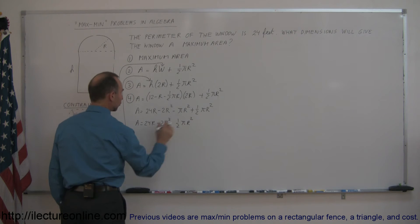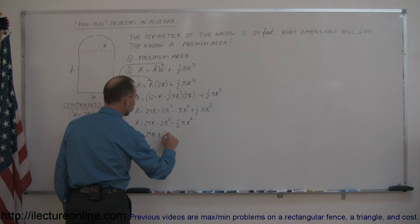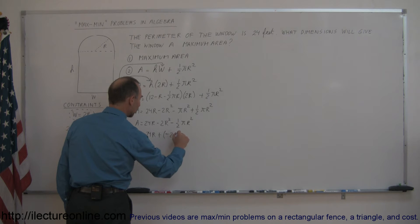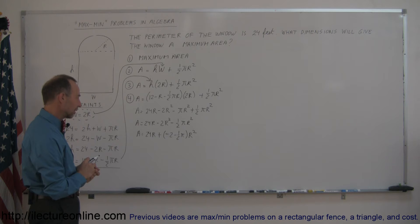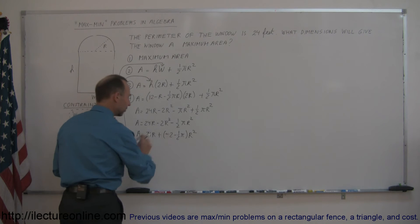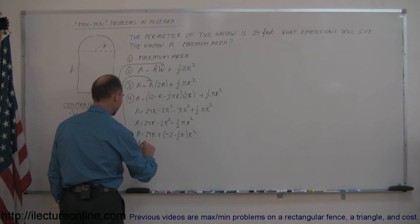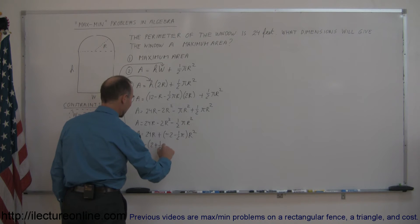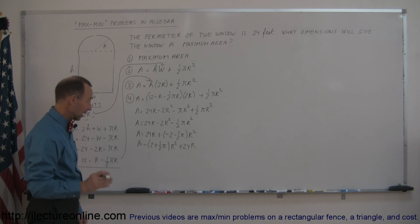Rearranging into quadratic form, we get A equals negative (2 plus one-half π) times r² plus 24R. Now we have a quadratic equation. We have the r² term and the r to the first power term — we don't have a constant term, but that's okay. This matches the standard form y equals ax² plus bx plus c.